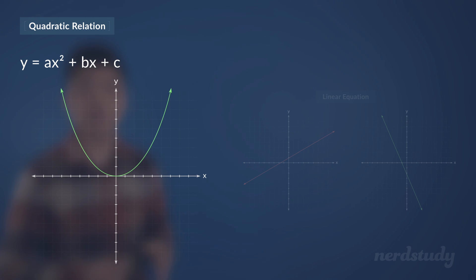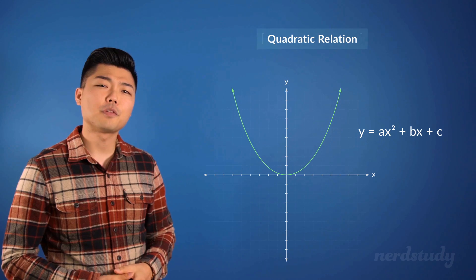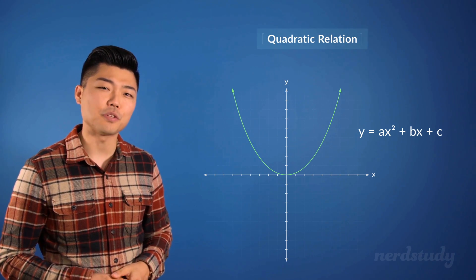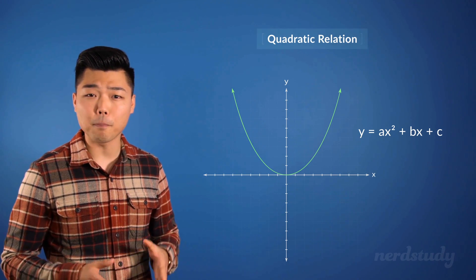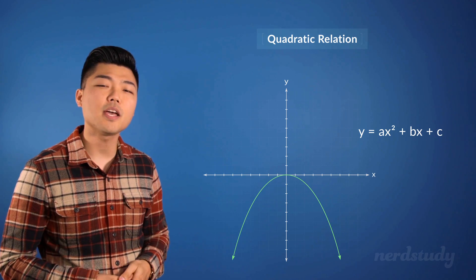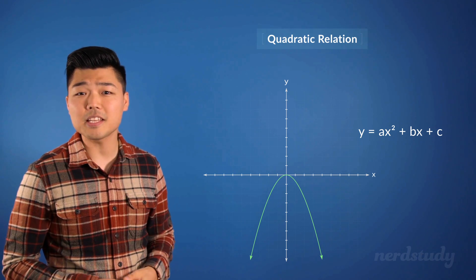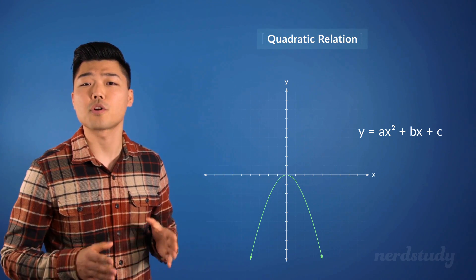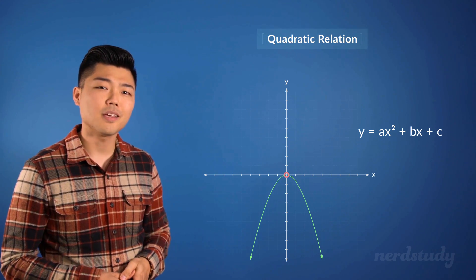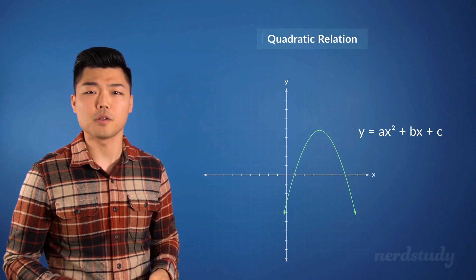One other way to refer to the graph that represents a quadratic relation is a parabola. Now, depending on the exact equation, a parabola can either be pointing up or down, and can be either wider or narrower. And of course, it doesn't need to necessarily have to start right at the origin. It can start anywhere else as well.